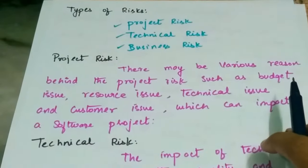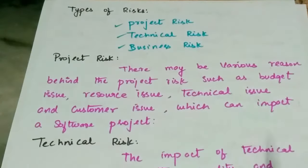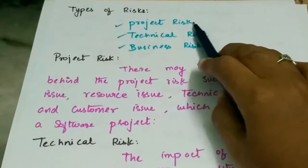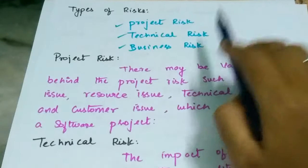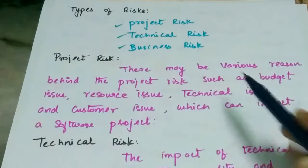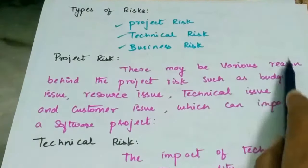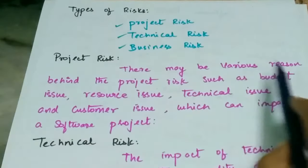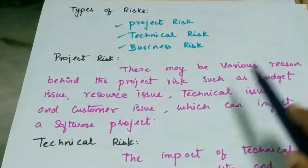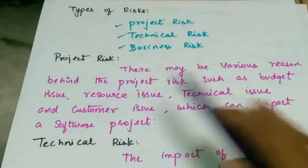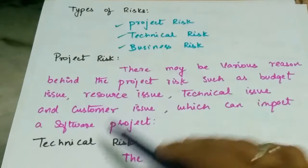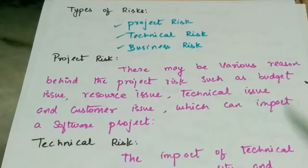Types of risk: there are three types of risk — software project risk, technical risk, and business risk. There may be various reasons behind project risk, including budget issues, resource issues, technical issues, and customer issues, which can impact a software project.